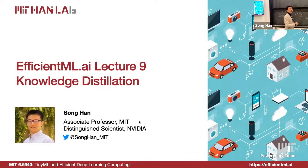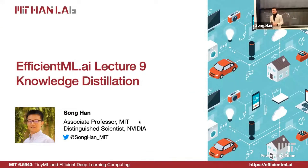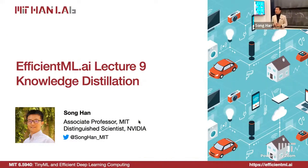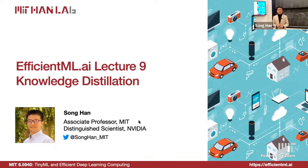Good afternoon, everyone. Let's get started. Today we are going to talk about efficient ML for the AI Lecture 9: knowledge distillation. This is a new chapter after we have talked about pruning, quantization, and neural architecture search. Now it's another technique about knowledge distillation.